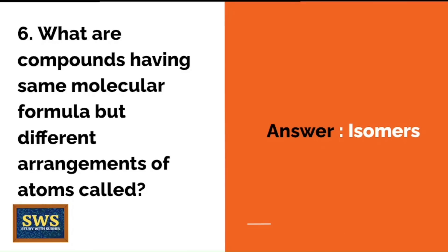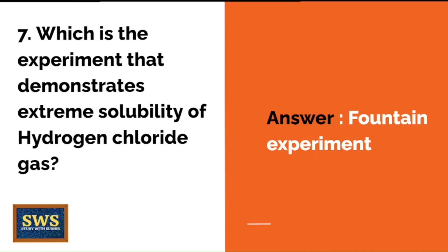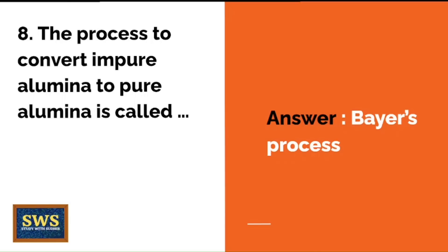What are compounds having the same molecular formula but different arrangements of atoms called? The correct answer is isomers. Which experiment demonstrates the extreme solubility of hydrogen chloride gas? The correct answer is the fountain experiment. This question could also be asked the other way round — asking you to explain what a fountain experiment is.